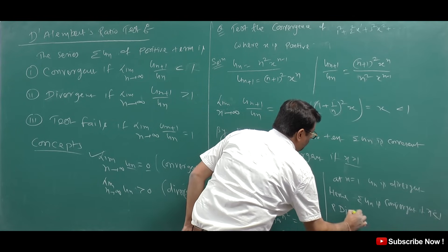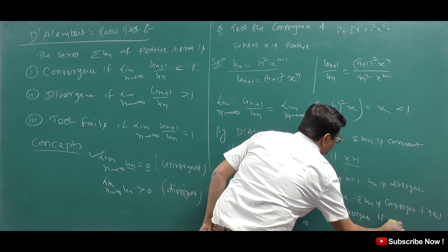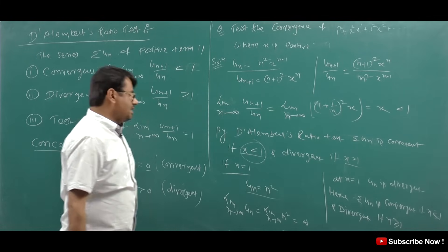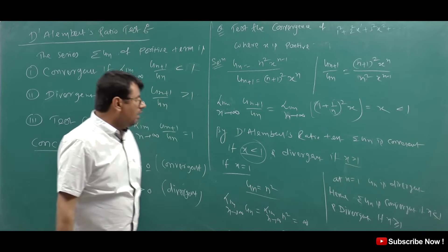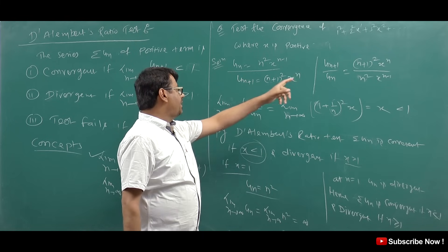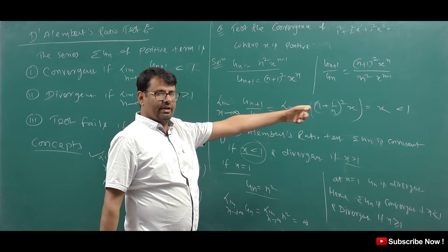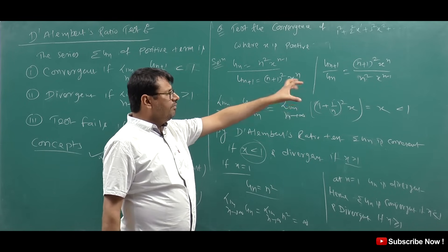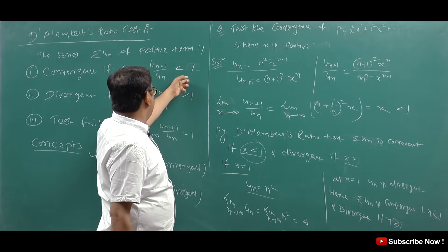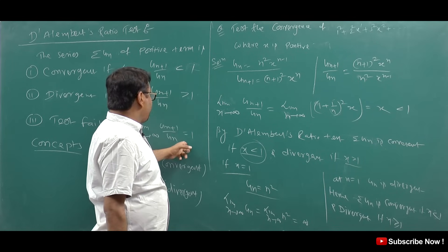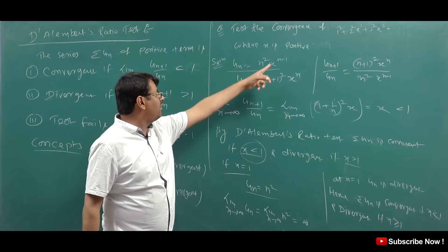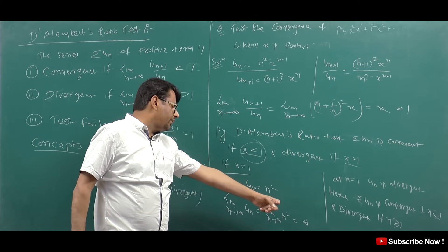And divergent if x is greater than or equal to 1. When x equals 1, u_n equals n², and the limit as n tends to infinity of u_n equals n², which tends to infinity — so the series is divergent. The convergence or divergence depends on x: convergent for x less than 1, divergent for x greater than 1.